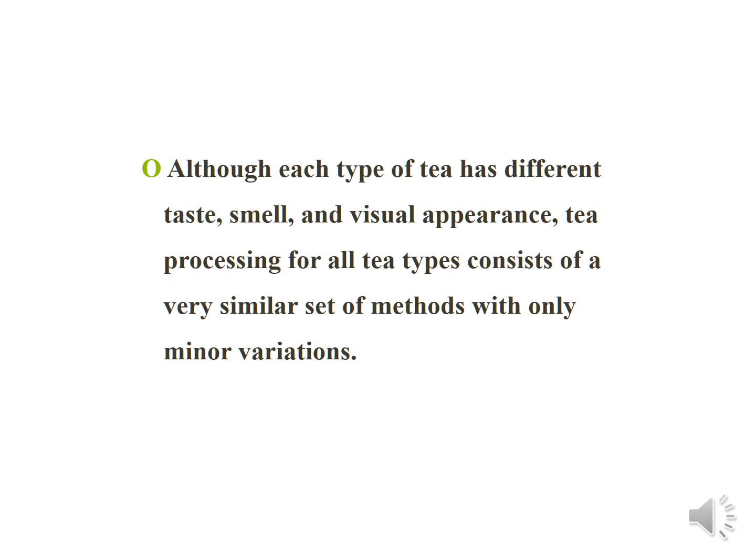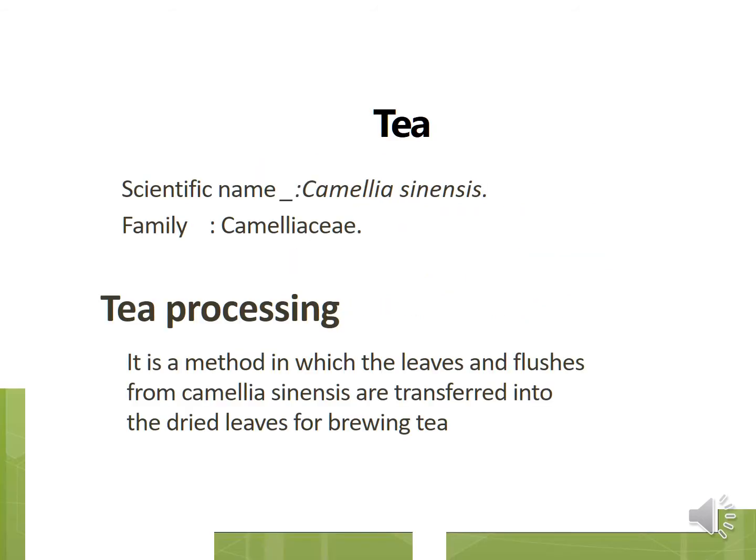Each tea type has a different taste, smell, and visual appearance. Tea processing for all tea types consists of a very similar set of methods with only minor variations. The scientific name is Camellia sinensis and the family is Theaceae.